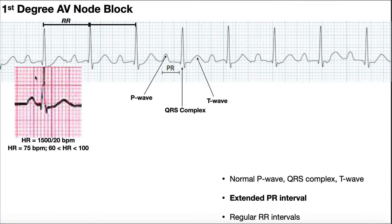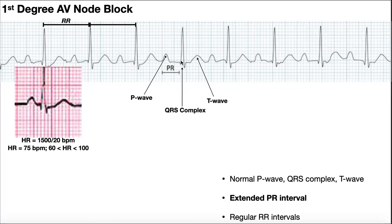Here's a QRS complex that could be from normal sinus rhythm, a T wave on the right, and a QRS complex that's narrow and normal. Here's a P wave. The PR interval is the space between where the P wave starts to rise up and where the QRS complex starts to rise up. Now look at this PR interval compared to this one — it's actually elongated here. Everything looks relatively normal: normal P wave, normal QRS, normal T wave — but the PR interval is elongated, or extended.